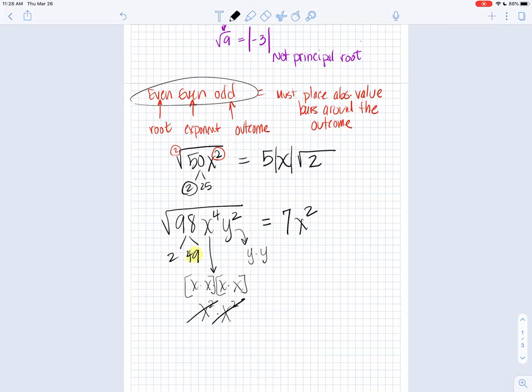And now I have the square root of y squared, and that's just y, and I have to use the absolute value bars. And then I still have a leftover 2, and that's my final answer.